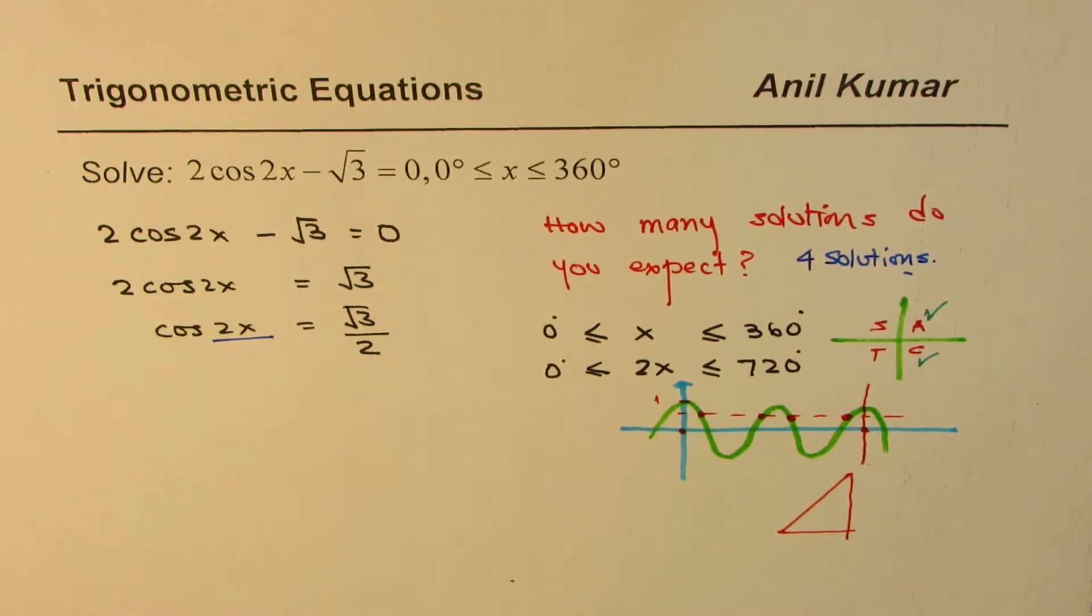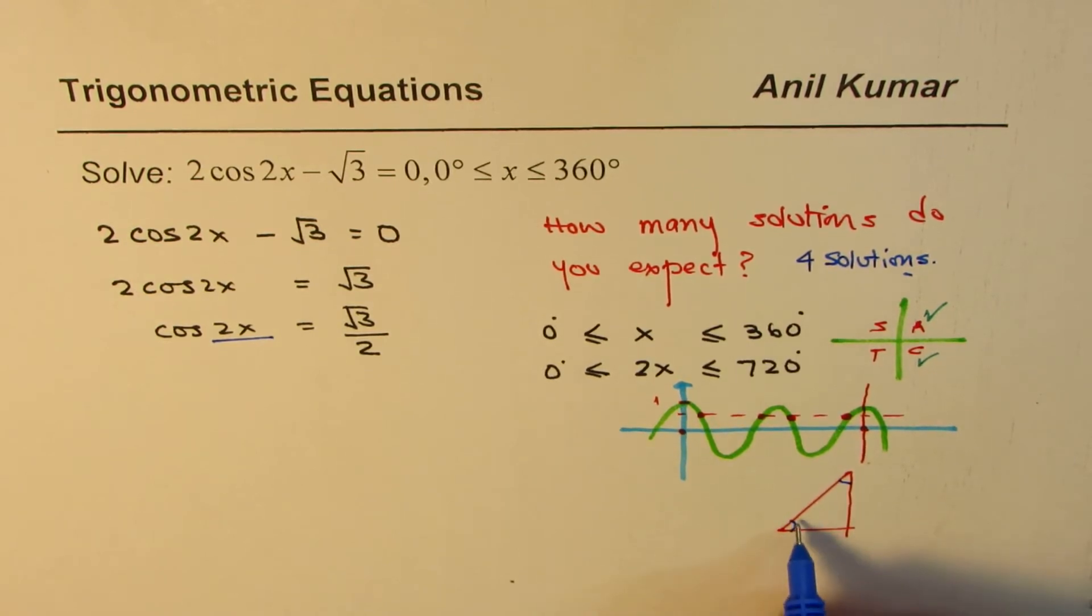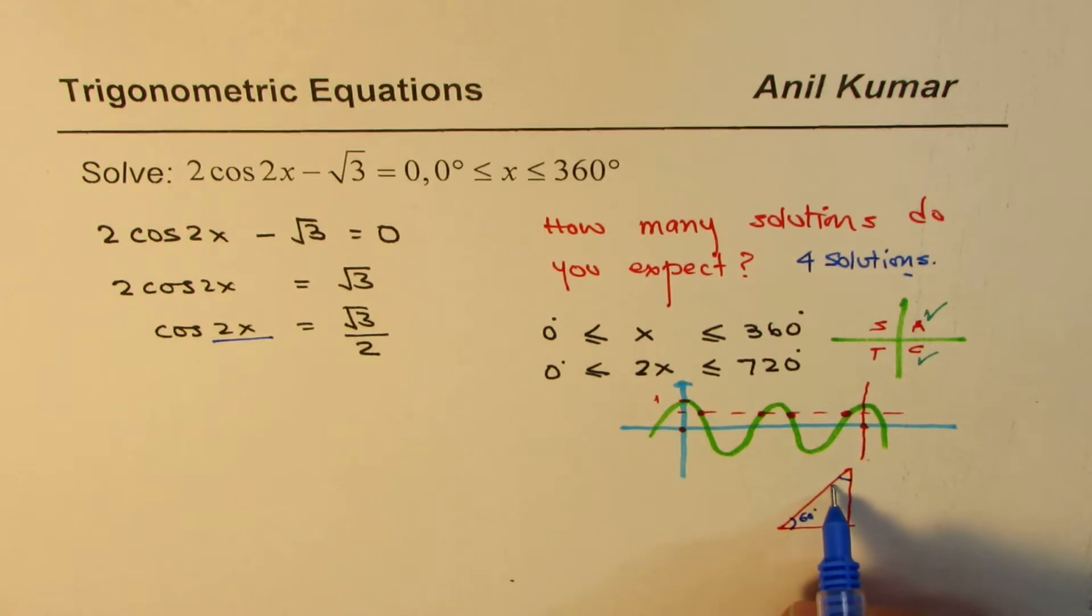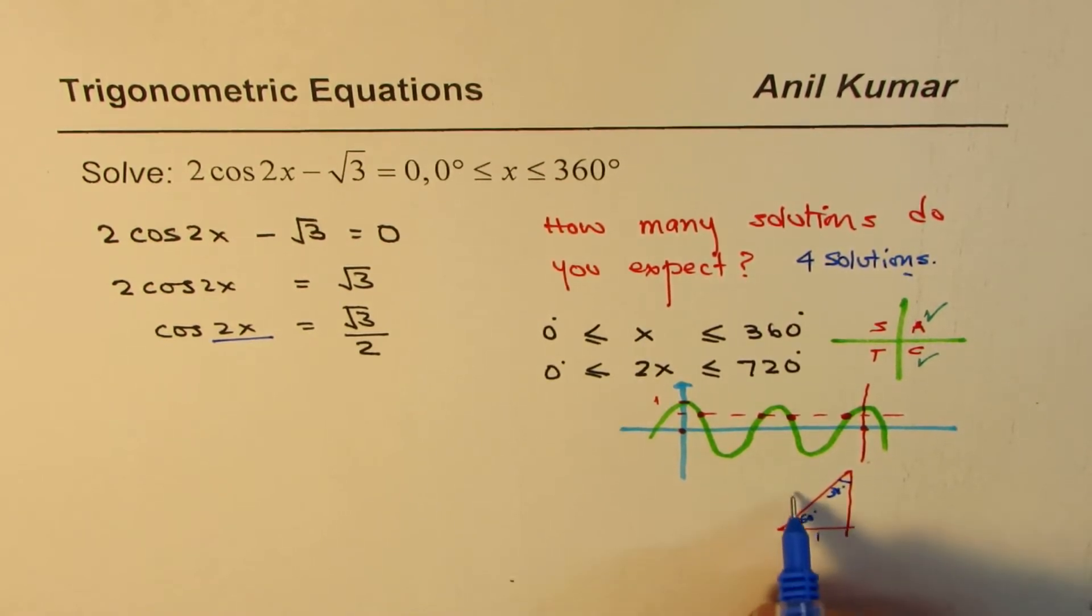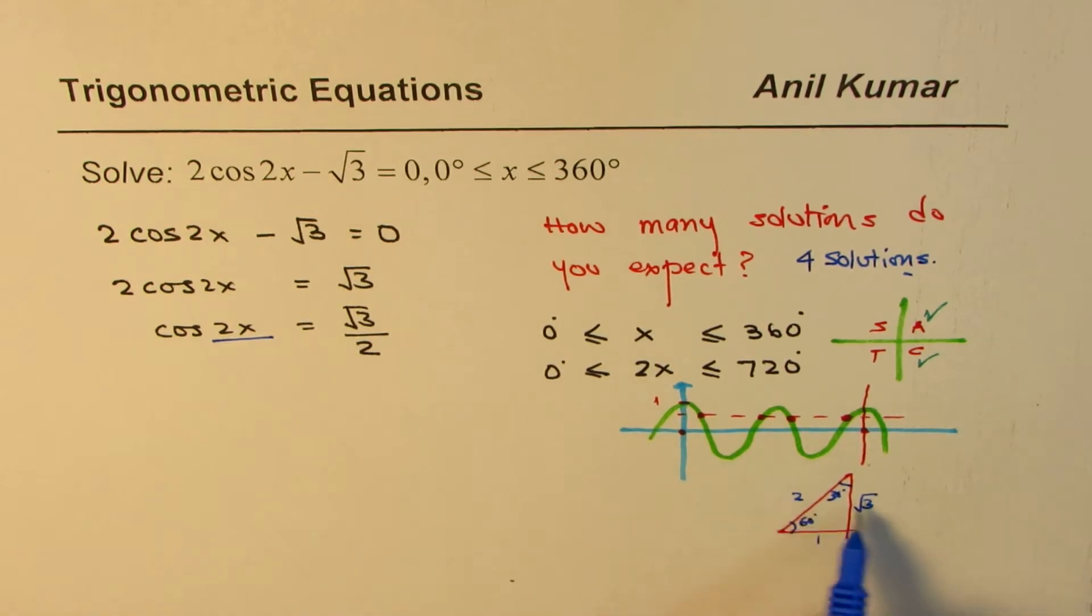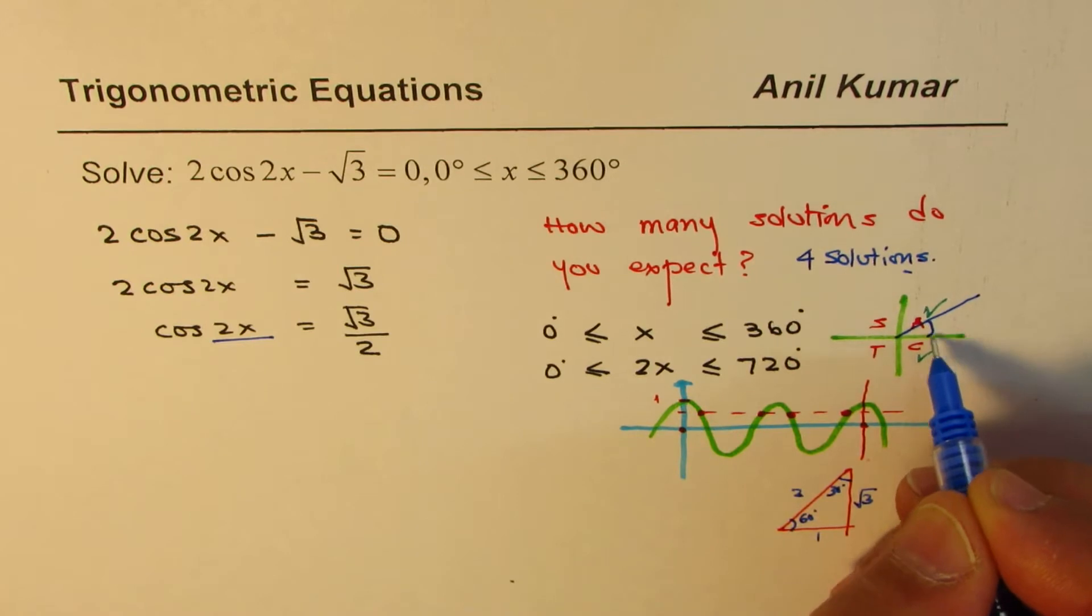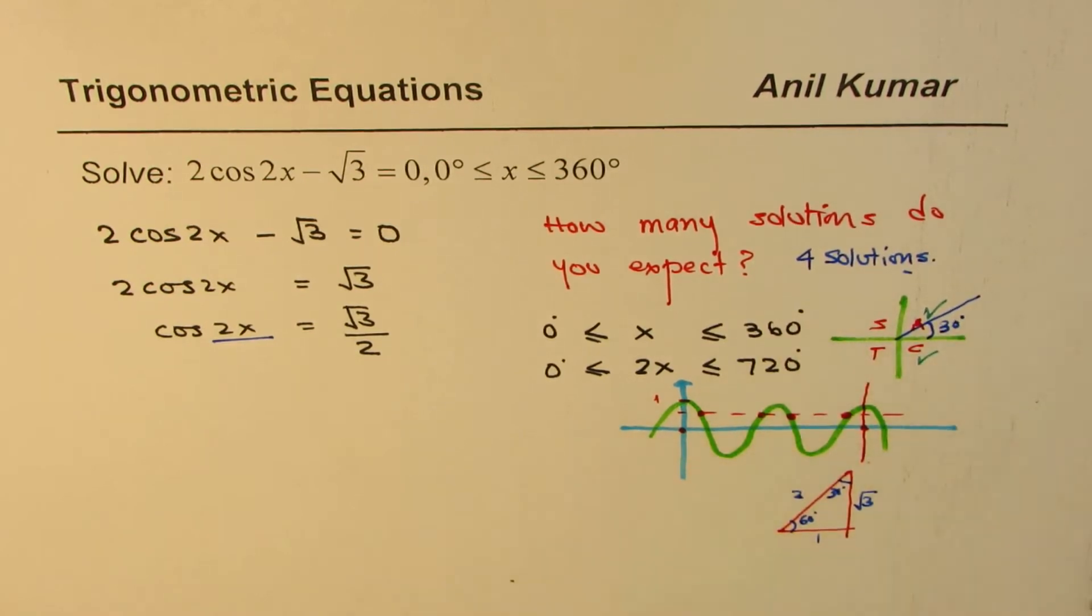So here is a special triangle where the angles are in degrees, 60 degrees, 30 degrees. This is 1, 2, square root 3. We are looking for square root 3 over 2 cosine function. Cos is adjacent over hypotenuse. So we're looking for 30 degrees. So the related acute angle for us is 30 degrees.